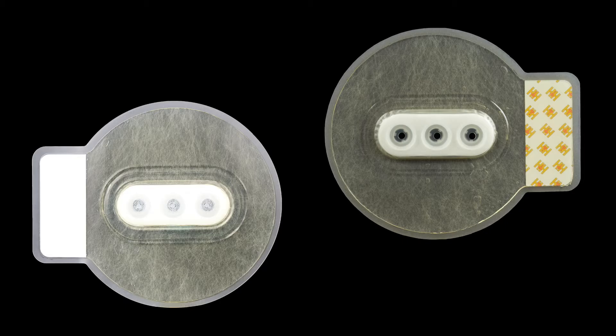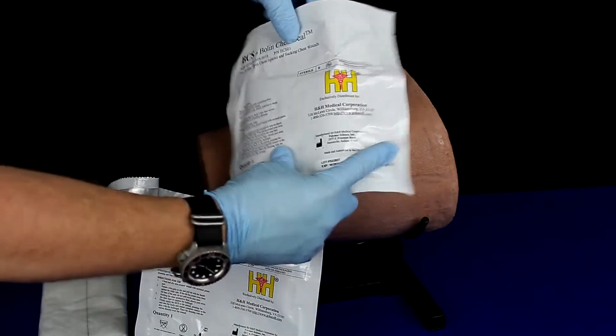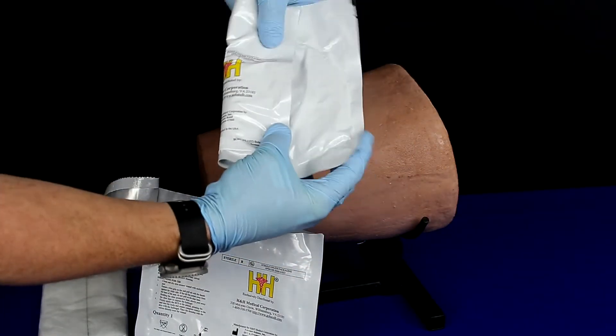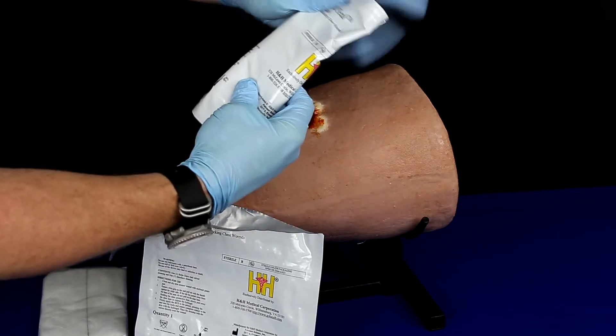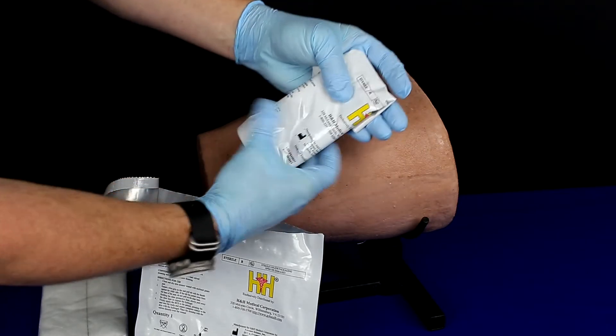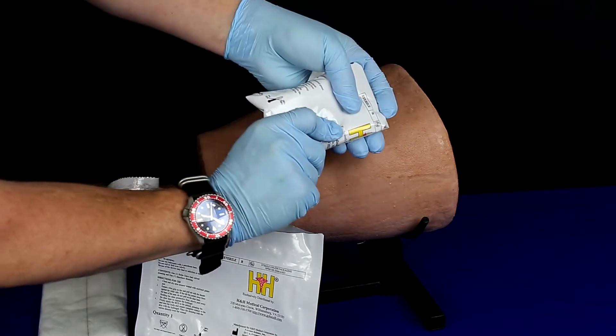The rugged polyurethane structure of the BCS ensures that the seal will function in harsh field environments and allows for easy application without wrinkling. The BCS can be rolled or folded to fit into a medical pack.